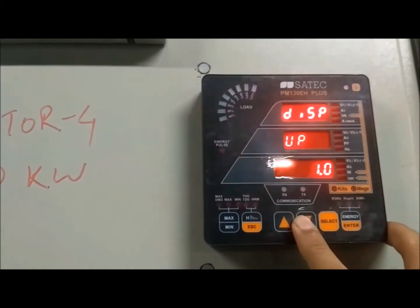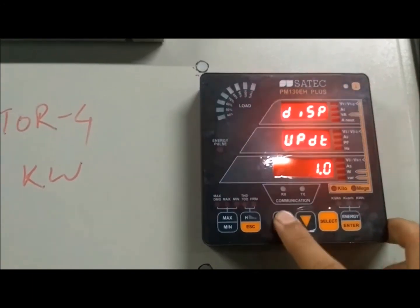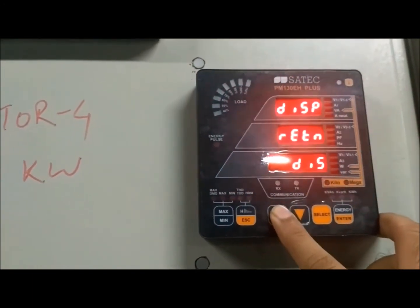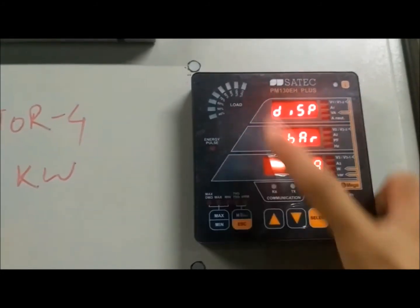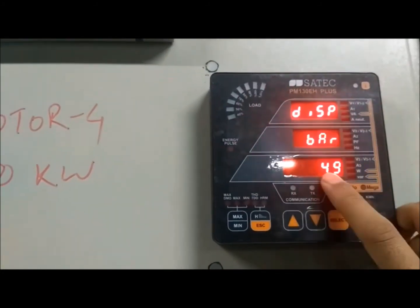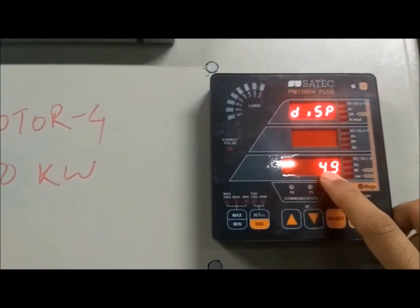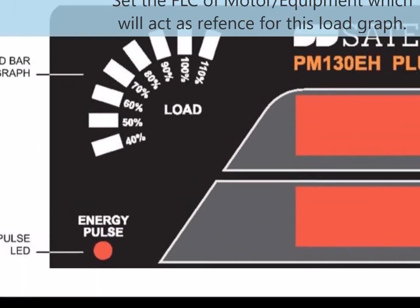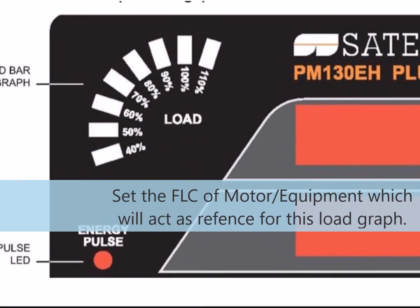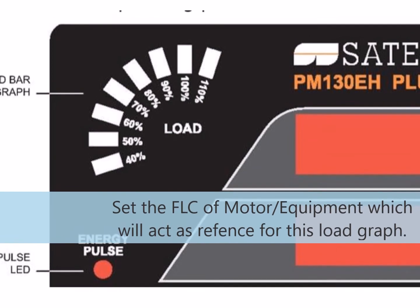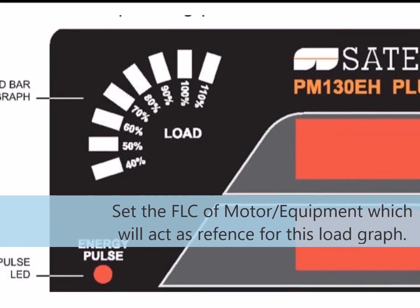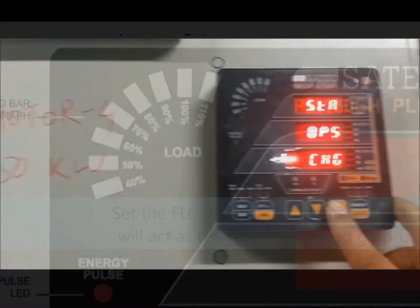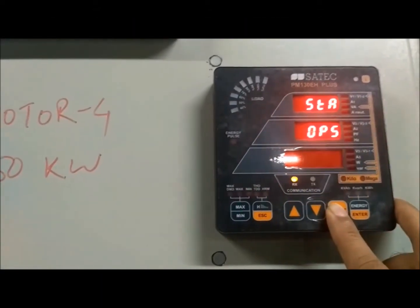Here you can see the update refresh rate and scroll settings. This is the bar graph reference: 49 amps is set as the full load current. If you want to set the bar graph, you have to set the full load current of your equipment.